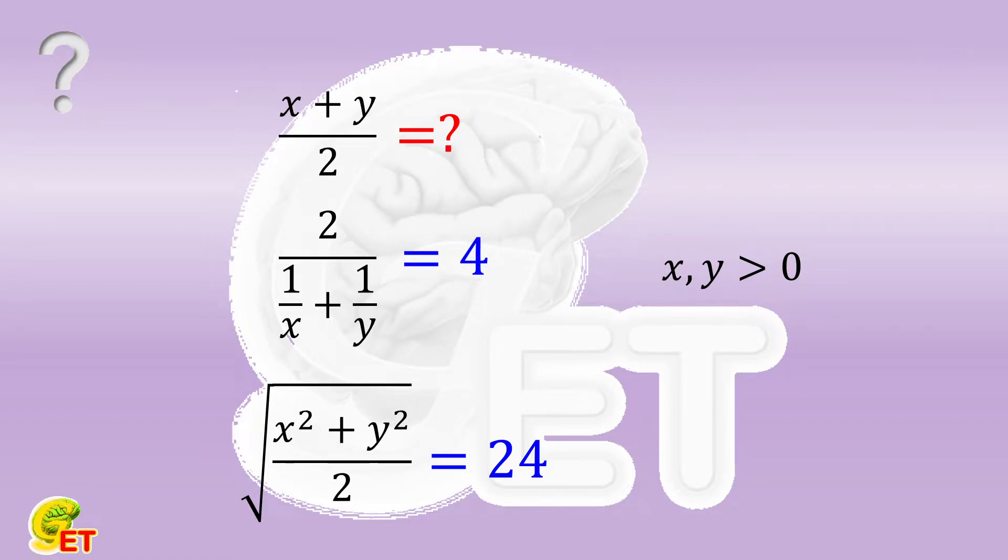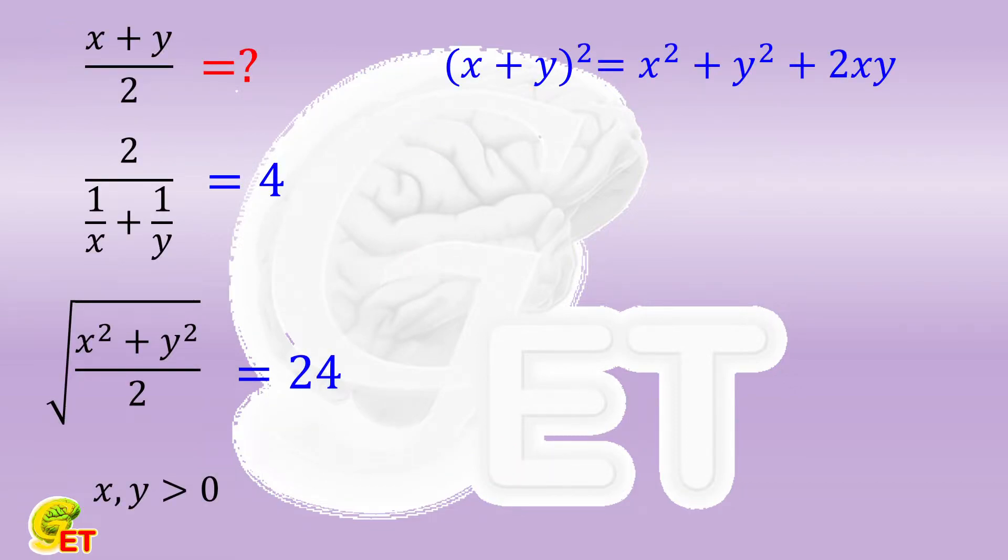What bridges those three kinds of mean values is the perfect square formula: the square of x plus y equals the square of x plus the square of y, plus twice x times y.